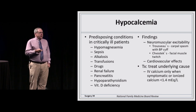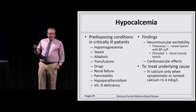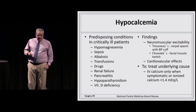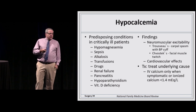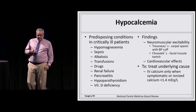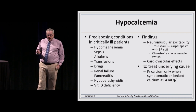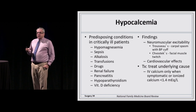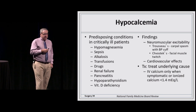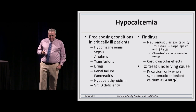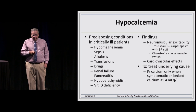Hypocalcemia is associated with hypomagnesemia — they occur together. Other causes include drugs, transfusions, pancreatitis, hypoparathyroidism, and vitamin D deficiency. Patients exhibit neuromuscular excitability — Chvostek's and Trousseau's signs — and arrhythmias. Treat the underlying cause; give IV calcium only when the patient is symptomatic or ionized calcium drops below 1.4 mEq/L.